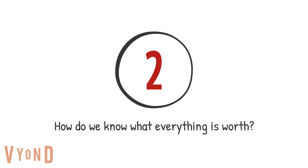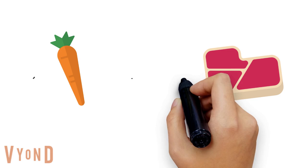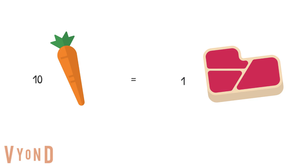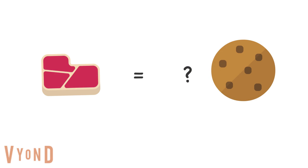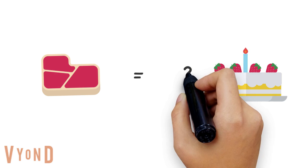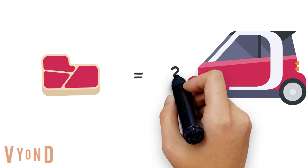Secondly, how do we know what everything is worth? It's very difficult to work out the value of bartered goods. Mary and Mike may know that 10 carrots is worth one piece of steak, but how many hamburgers can we get for one steak? How many cookies or cakes? How many steaks does it take to buy one car?